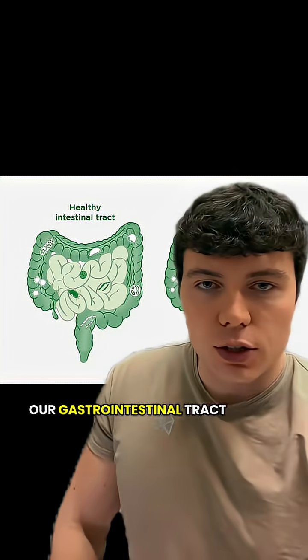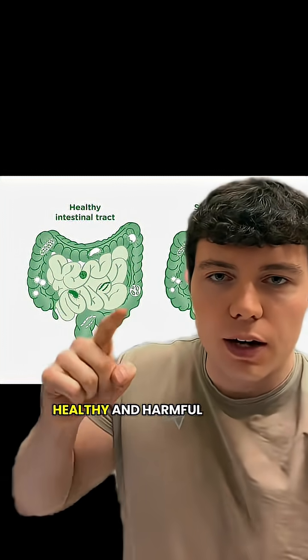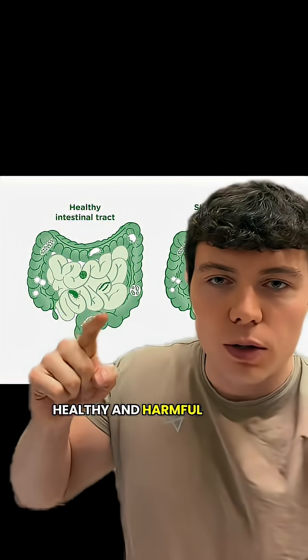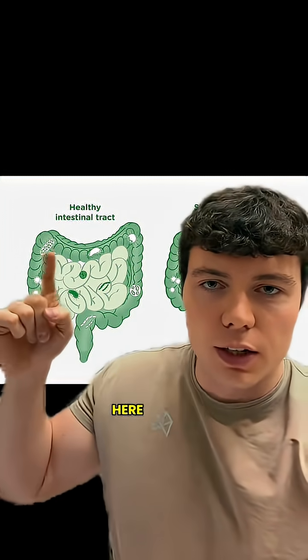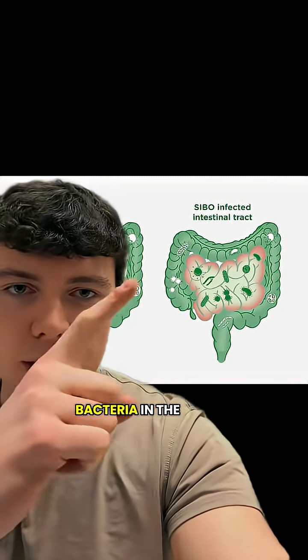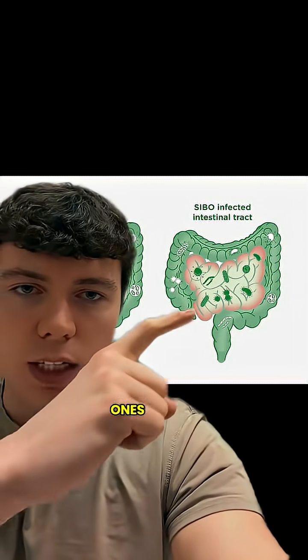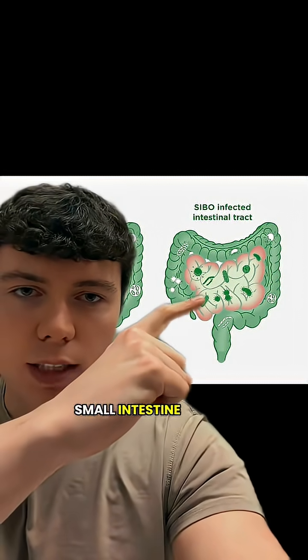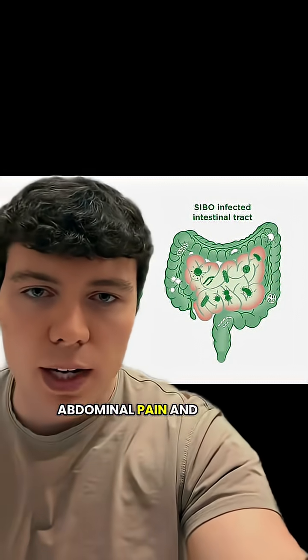Our gastrointestinal tract is abundant in many bacteria — healthy and harmful — but they're mainly found in the large intestine, right here, sometimes called the colon. Some of those bacteria in the colon, specifically the harmful ones, can enter the small intestine where they can cause problems like abdominal pain and bloating.